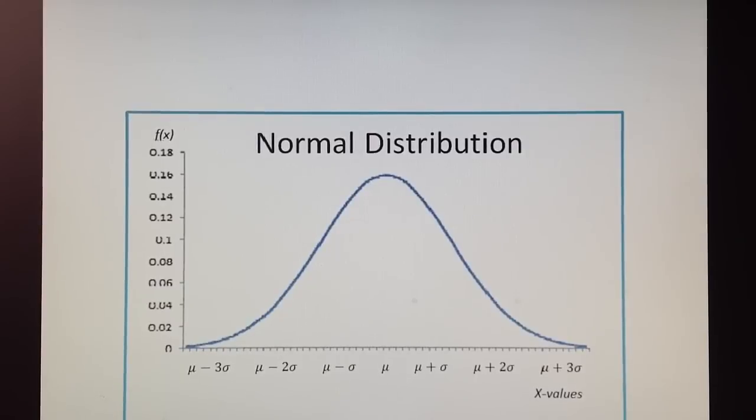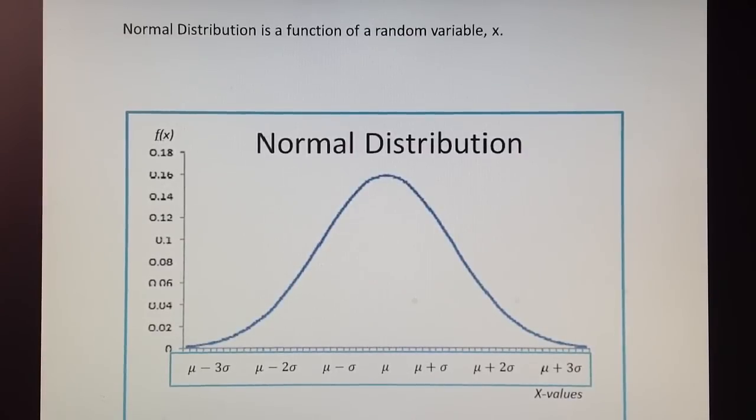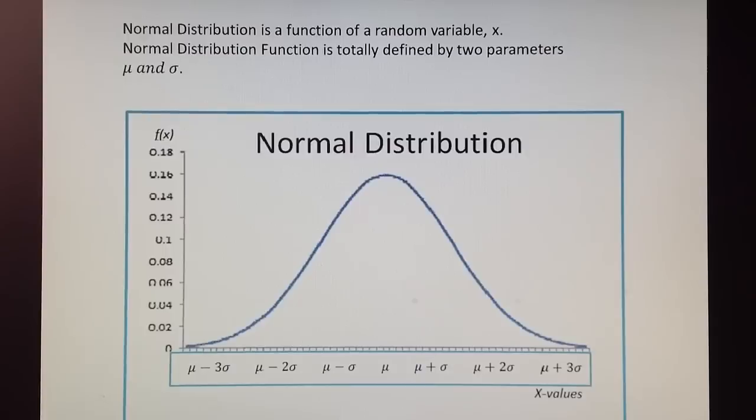Normal distribution is always symmetrical. It represents the distribution of a random variable x, any random variable x. Normal distribution depends only on the mean and the standard deviation and it changes as x changes.